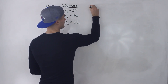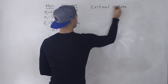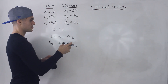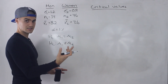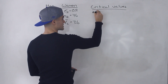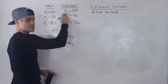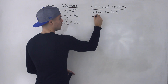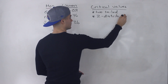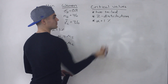The first thing to get is the critical values. They depend on whether it's one-tailed or two-tailed — one-tailed needs one critical value, two-tailed needs two. In this case it's two-tailed. Also, since the population standard deviations are given, the critical values are going to be on a Z distribution. The significance level is 1%.